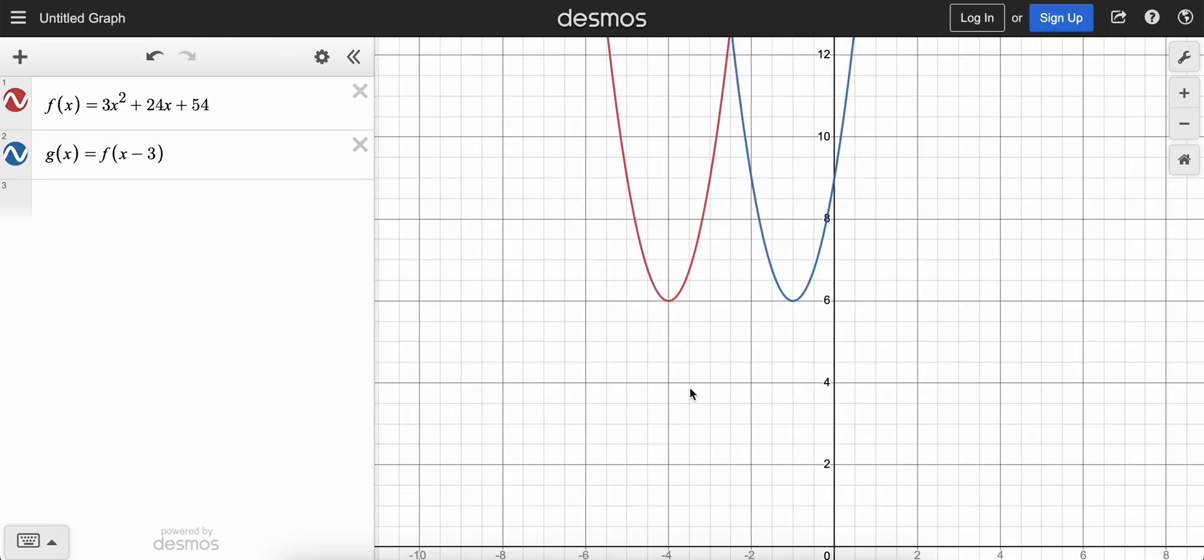So you can see if I go up here that we've got both functions. You can now see that g of x is just the same thing as f of x, but it's shifted over to the right. Looks like three spots, right?